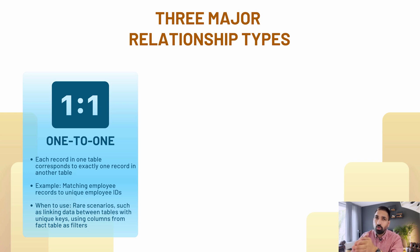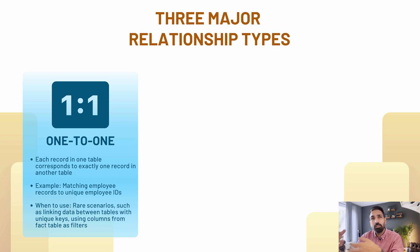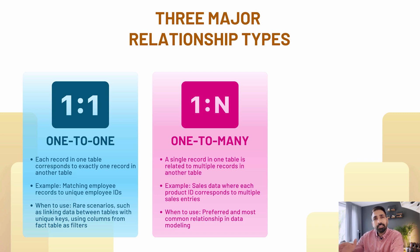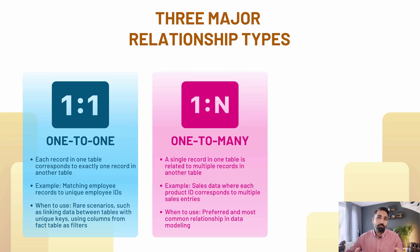That's why we use dimensional modeling: we store measures and calculations in the fact table, and descriptive information in dimension tables, arranged into star schema, snowflake schema, or constellation/galaxy schema. The second type is one-to-many, which is the ideal relationship in Power BI data modeling. You have the one side on your dimension table and the many side on your fact table.